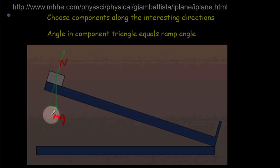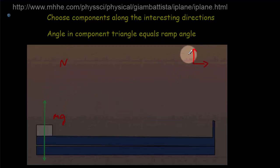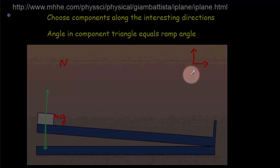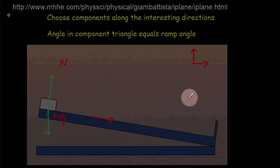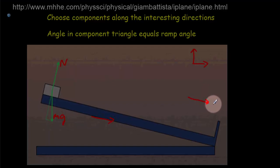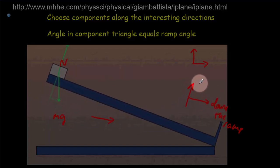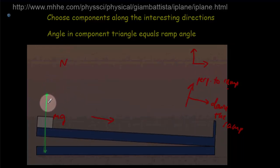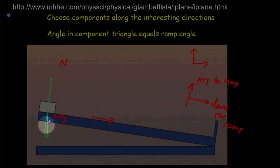The weight would act straight down. In most systems, what we do is resolve into components choosing the vertical and horizontal directions. But in this particular case, the interesting motion is straight down the ramp. So we're going to resolve our components into a component down the ramp and another component perpendicular to the ramp along the direction of the normal. That normal vector doesn't need to be resolved because it's already normal to the ramp.